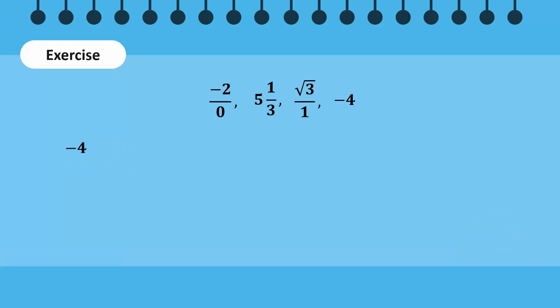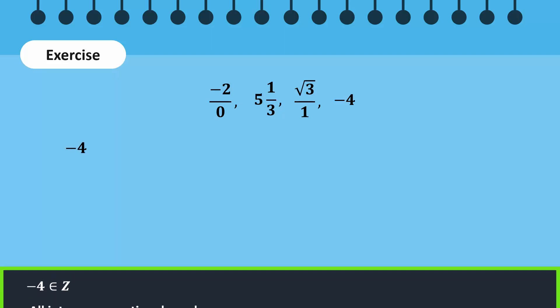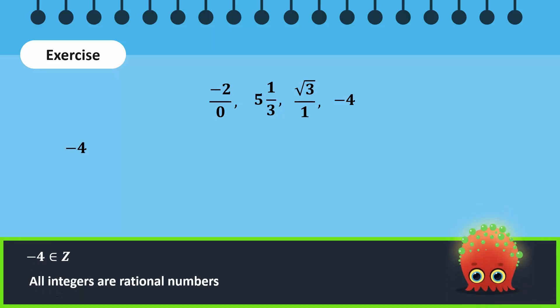-4 is an integer. Recall that all integers are rational numbers. So, -4 belongs to set Q.